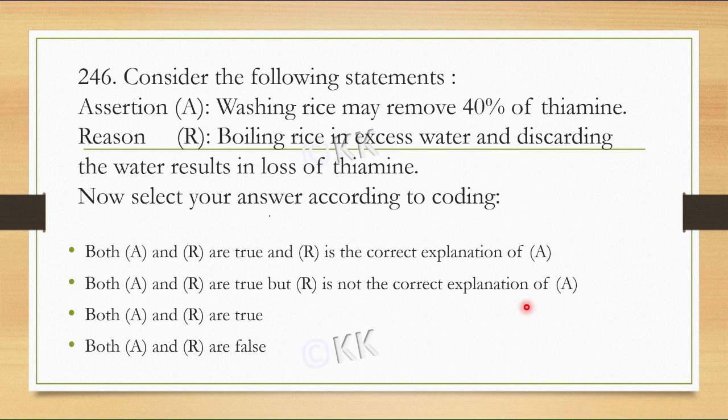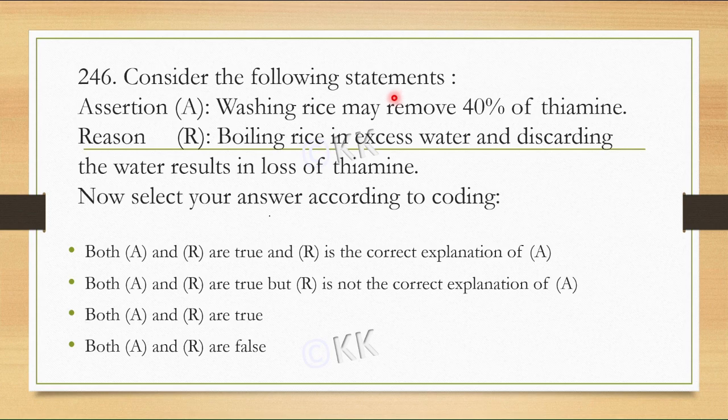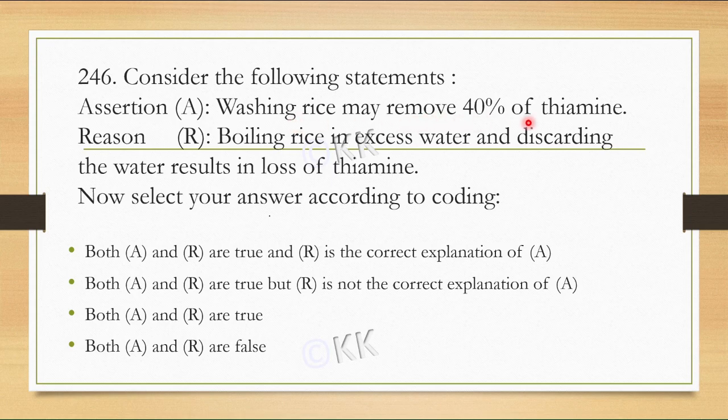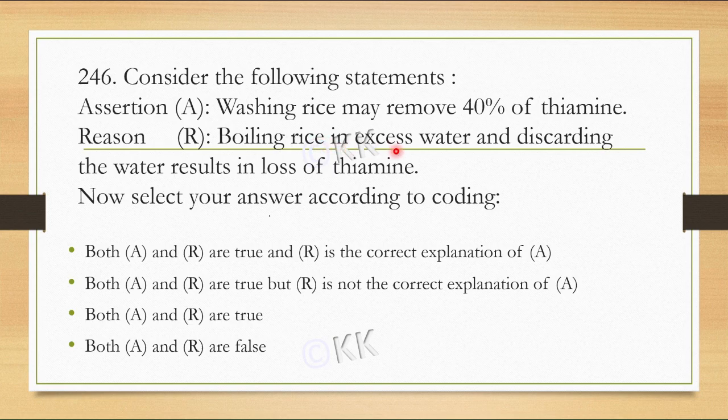Next question: Consider the following statements. This is an assertion-reason type question. Assertion (A): Washing rice may remove 40% of thiamine. Reason (R): Boiling rice in excess water and discarding the water results in loss of thiamine. Select your answer according to coding.